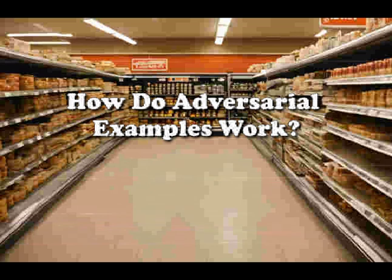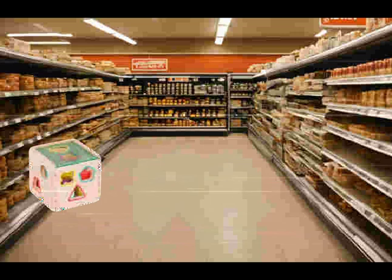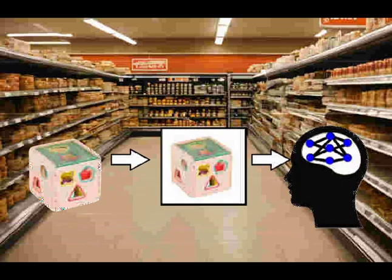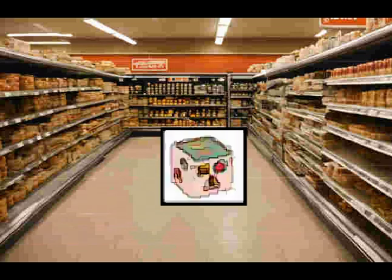How do adversarial examples work? To explain that, we need to be aware of three layers of reality. There's the actual object, the input representation you see of the object, and your interpretation of the object. A representation of an object can be an image or photo of it. Since it's just a middleman messenger, its messages can be corrupted, like in a game of telephone.